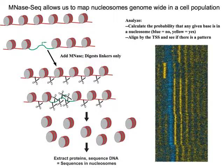If we want to find out where nucleosomes are, the first thing we do is take an enzyme that will digest DNA that's accessible — micrococcal nuclease, in this case — which can chew up the DNA that's in the linker between nucleosomes.